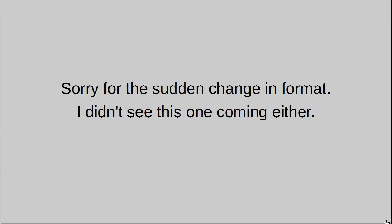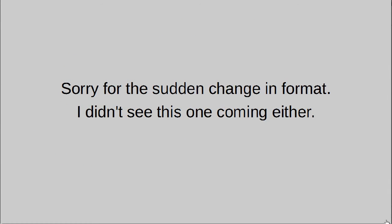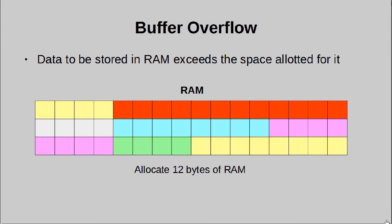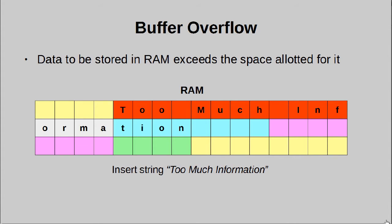I apologize in advance for turning the remainder of this video into a slideshow. I had originally wanted to take this episode in a different direction, but I realized it would make me overrun horribly, so what you're seeing here was actually cobbled together in editing. First and foremost is buffer overflow, which happens when you allocate a certain amount of RAM space for a value, but you end up inserting a value too large for that space.